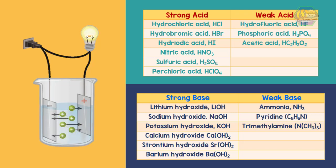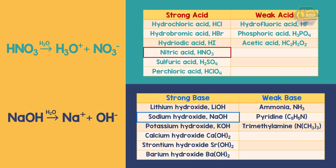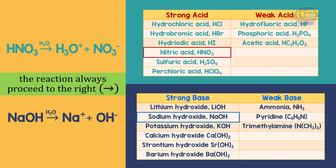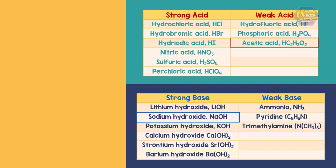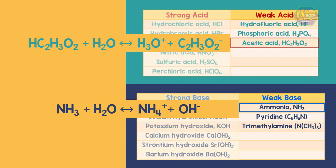When a strong acid like nitric acid dissolves in water, the chemical equation shows complete dissociation. When a strong base like sodium hydroxide dissolves in water, the chemical equation also shows complete dissociation — the reaction always proceeds to the right. For a weak acid like acetic acid or a weak base like ammonia, the chemical equations use a double-headed arrow indicating a reversible reaction.